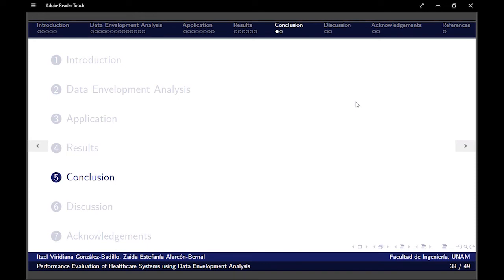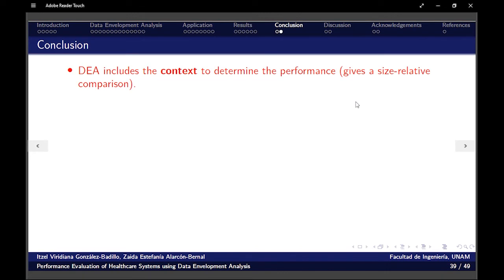So, the conclusion of all that data found. Data envelopment analysis includes the context to determine the performance. It gives a size-relative comparison. It doesn't matter if the DMU that we're getting is huge or is really little. It will be relative. It gives a feedback with the weights displayed so we can make changes.